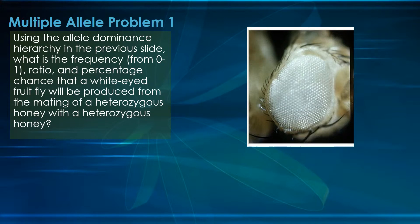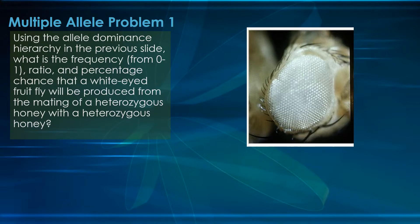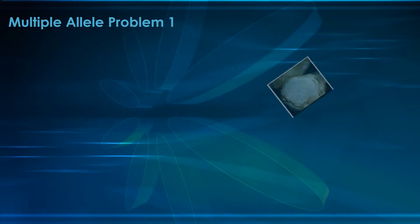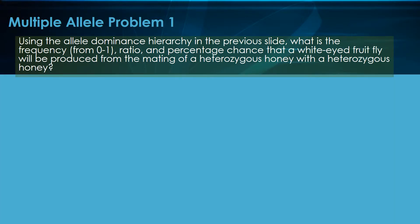We're talking fruit fly eye color here. Let's take a look at this problem. There's the problem there. Here's our place to write. We always want to know our alleles. Alleles, parents, offspring. Let's look at those three things.